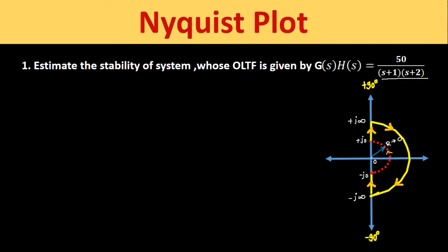We will divide the whole Nyquist path into three sections: section 1 (C1), section 2 (C2), and section 3 (C3). Remember that the Nyquist path direction should be taken in the clockwise direction. This yellow line shows the required Nyquist path.